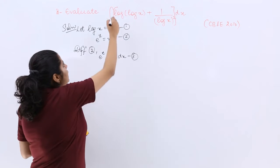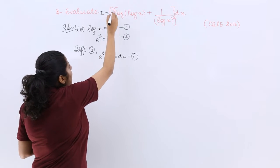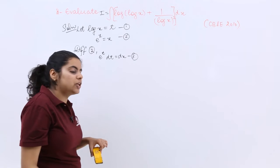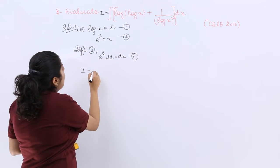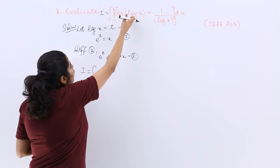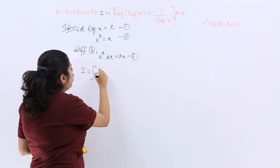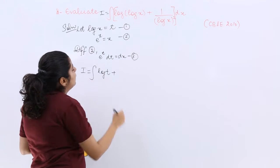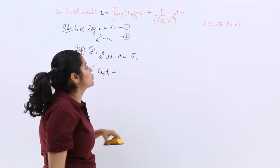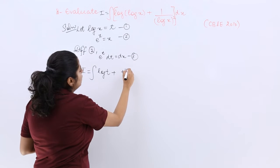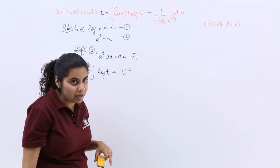Now let me see if my question is nothing but I. So my I now changes. I becomes what? I becomes integral log(log x). Now what is log x? It is t. So it is log t plus 1 upon (log x) whole square means 1 upon t whole square means t raised to the power minus 2.